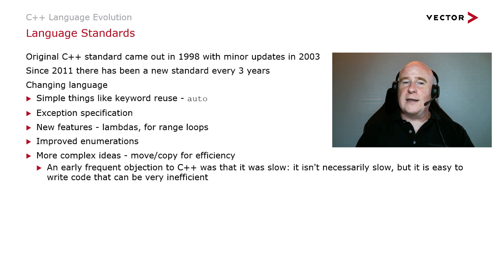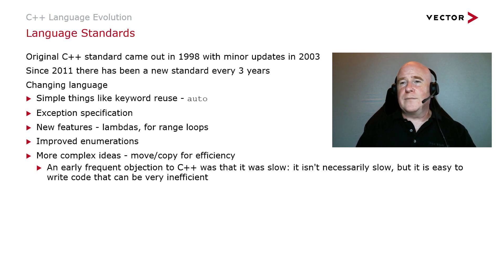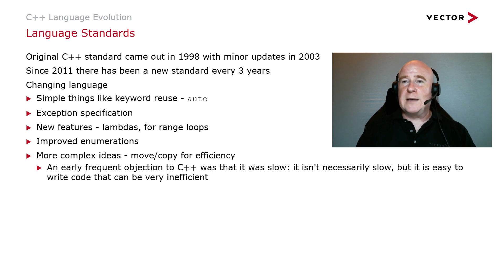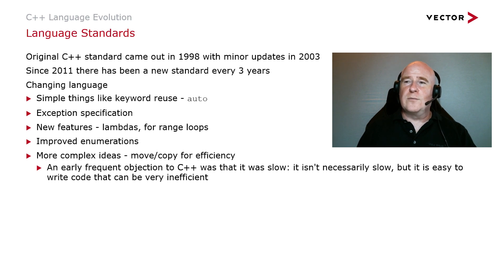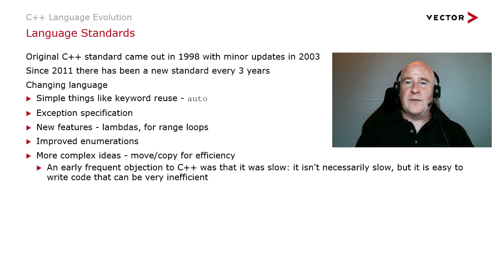Let's have a quick look at the C++ language evolution. The original C++ language standard came out in 1998 with a minor update in 2003. Since 2011, there have been new language standards every three years. The language has changed in some simple ways — for example, keyword reuse: the auto keyword now means something very different to what it did in the original standard. The way we specify exception specifications for functions has changed. There are new features: lambdas and for-range loops. Enumerations have been improved in terms of types and scoping. And there are more complex ideas related to efficiency — whether to move or copy objects. An early frequent objection to C++ was that it was slow, but it's quite easy to write code that is very inefficient, and some of the new language features are aimed to combat that.